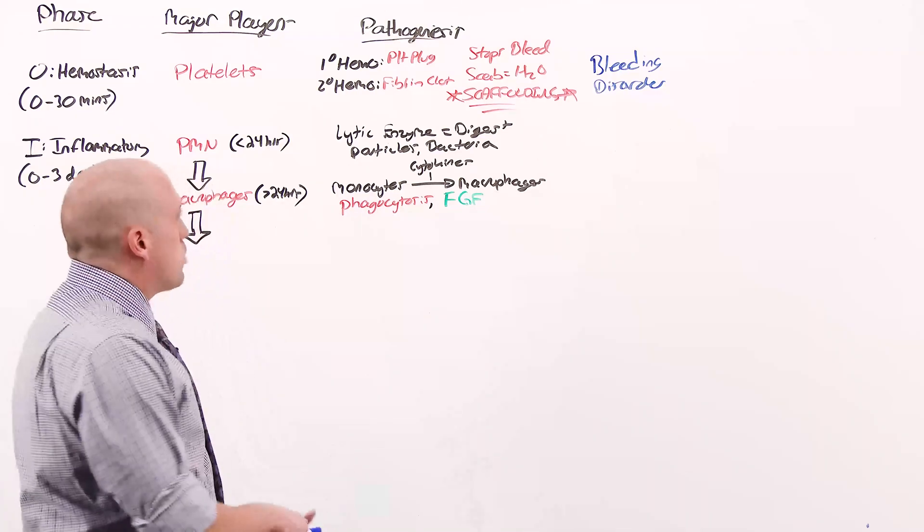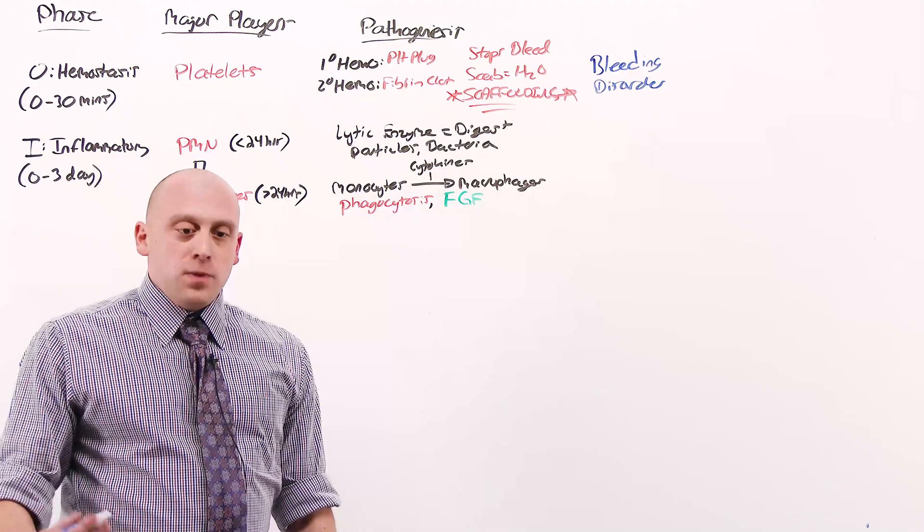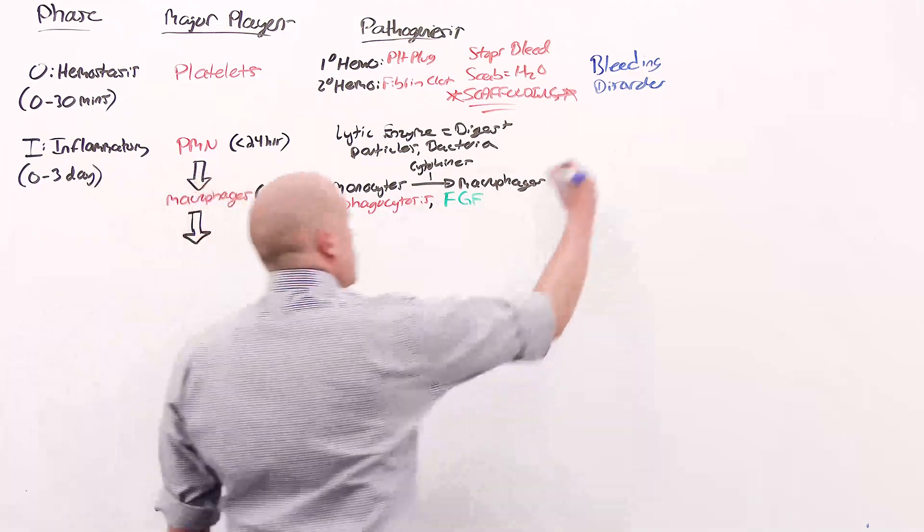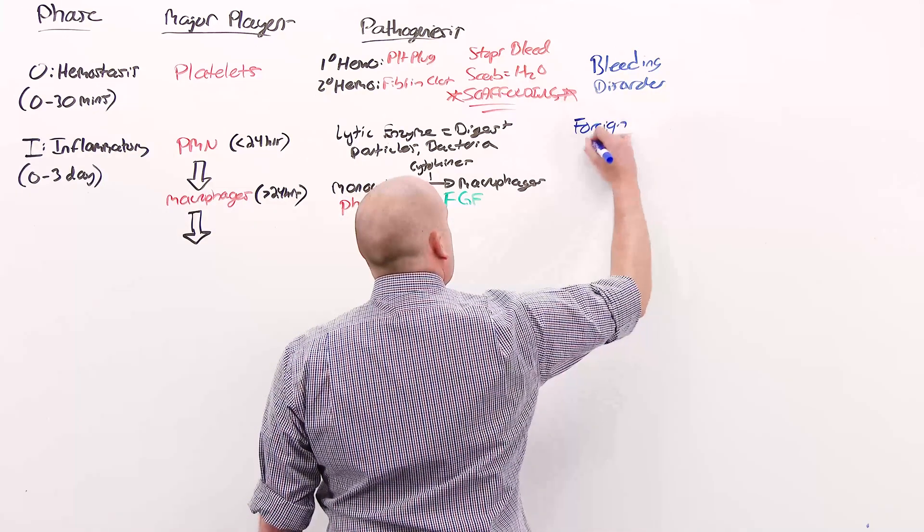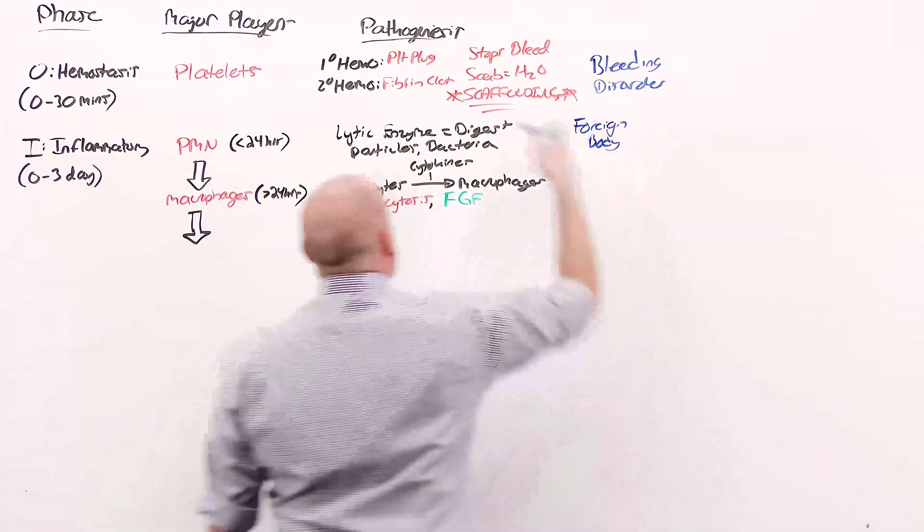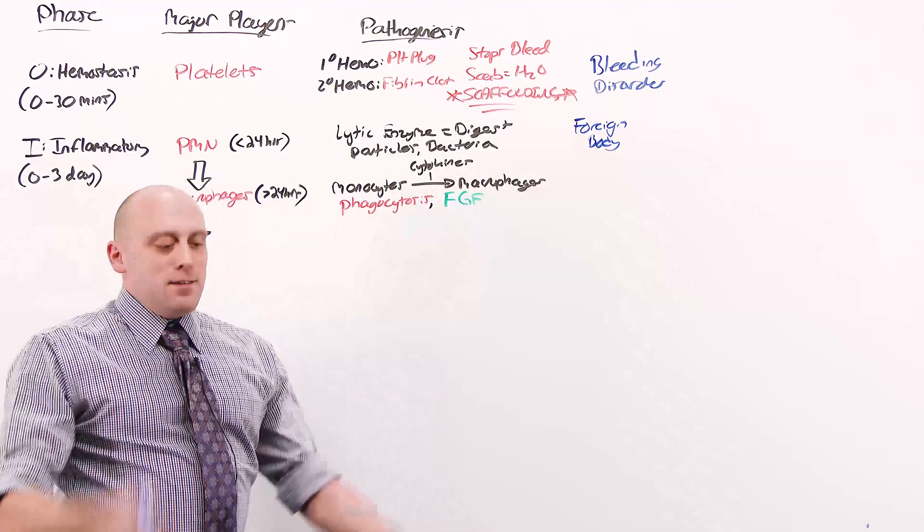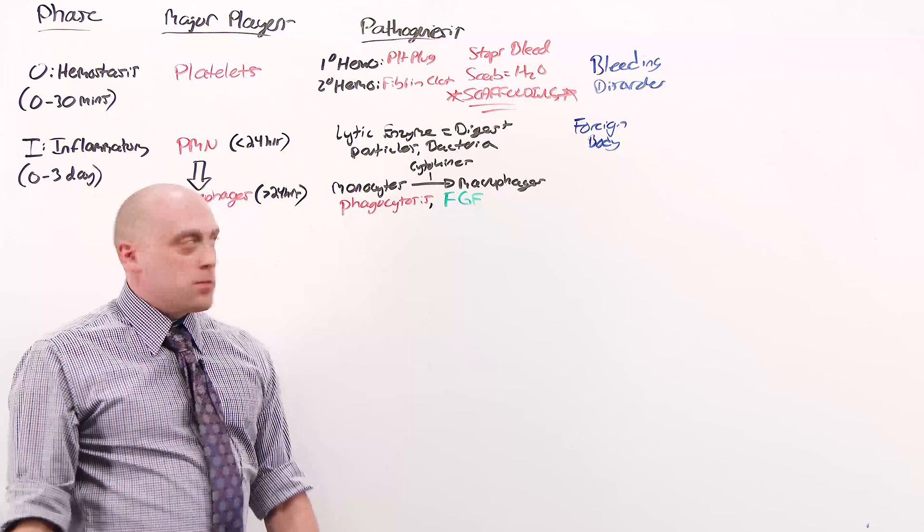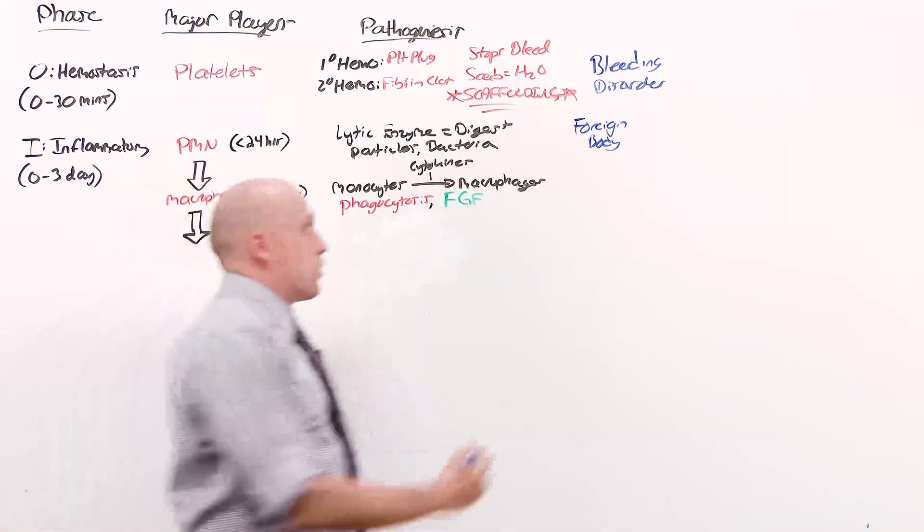Wound healing problems at this stage are primarily going to be related to the immune response. If you have a foreign body, especially one that's bigger than the macrophage, neutrophils can't break it down. Macrophages can't eat it. Bacteria can crawl along it. Foreign body is going to prolong wound healing. And here also, infection.